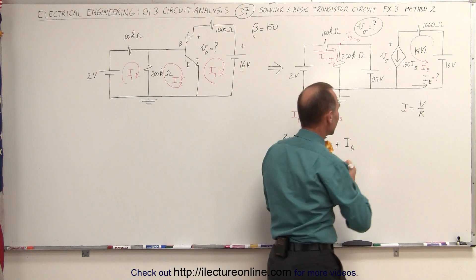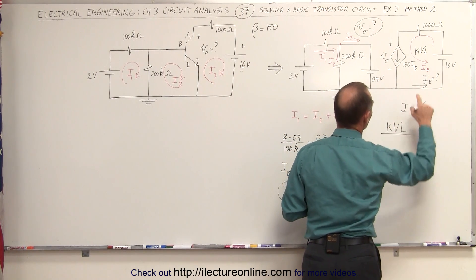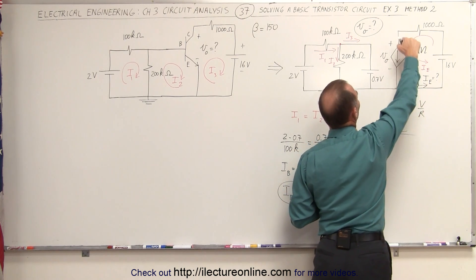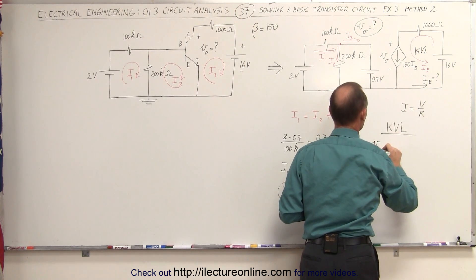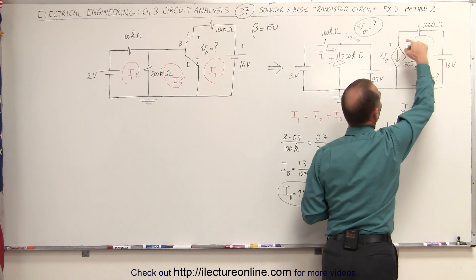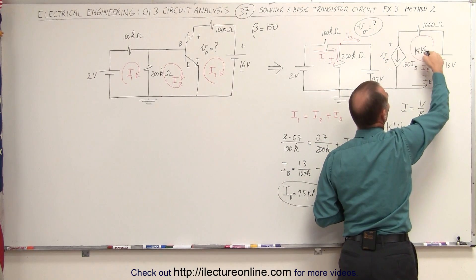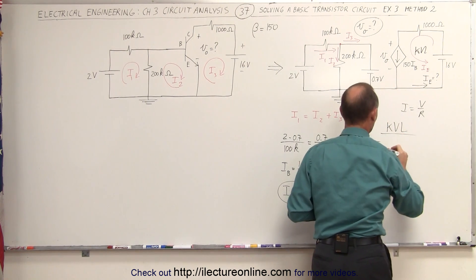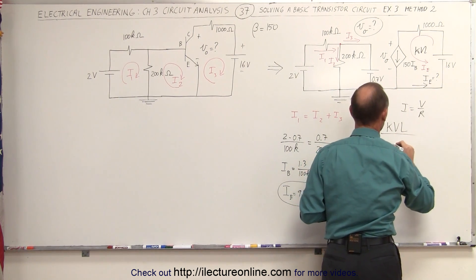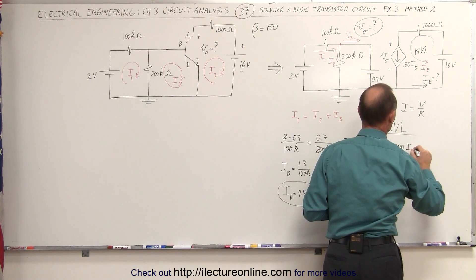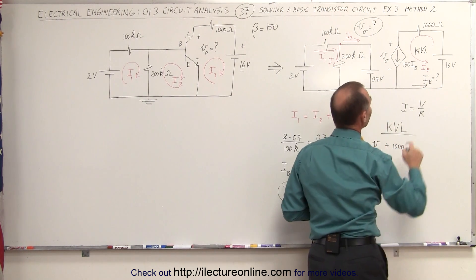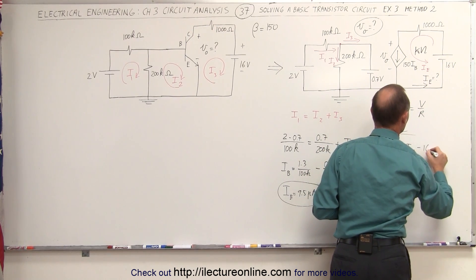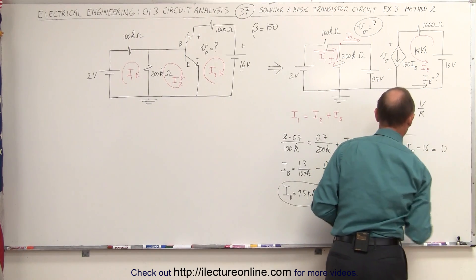So drawing the KVL loop around the loop, starting at this point right here, we can see that we have a voltage increase right there — that's V sub O. Then going across the resistor, notice we're going against the current — the current is in this direction, we're going against it — that's a voltage rise, that's plus the resistance 1000 times the current I sub E. And now we go from there to there across the voltage difference — that's minus 16 volts — coming back around to zero, equals zero.